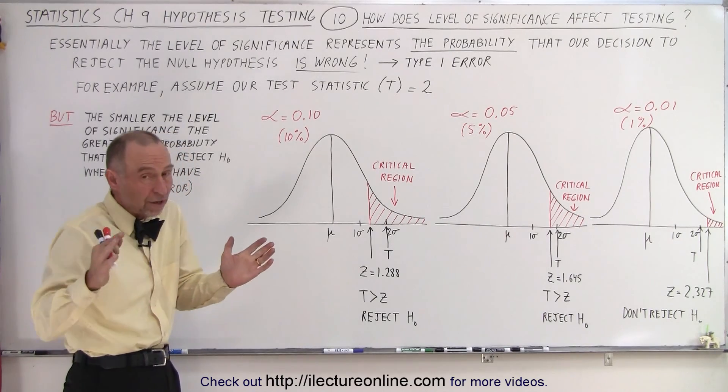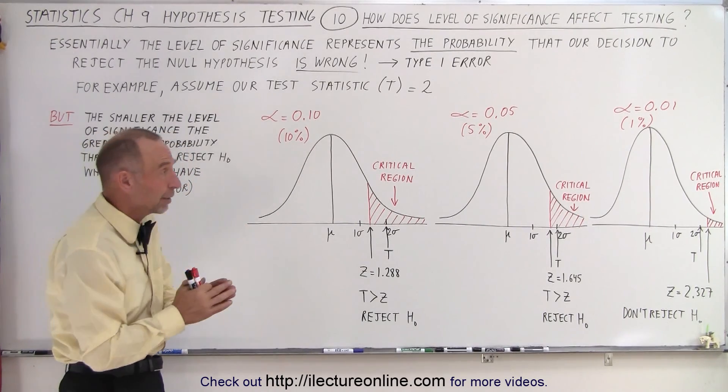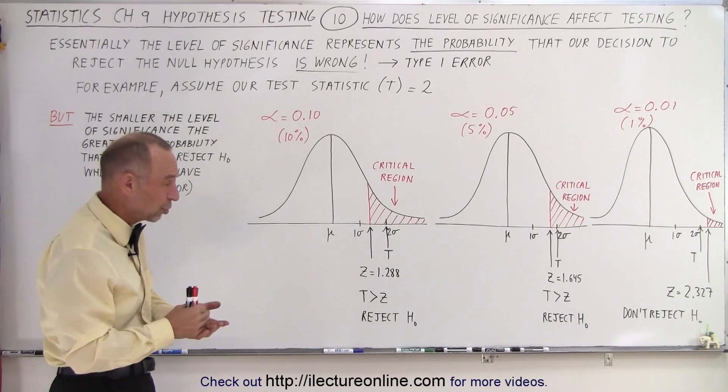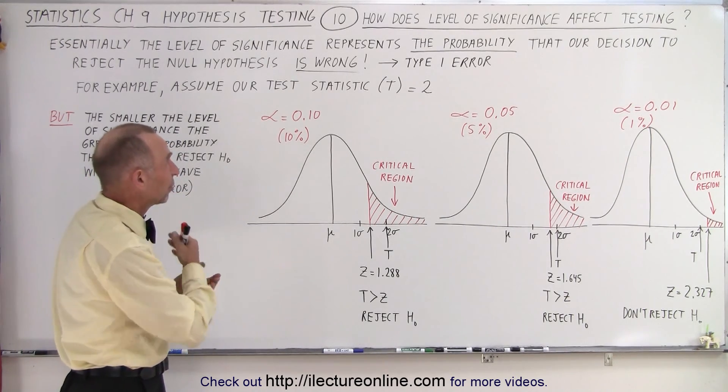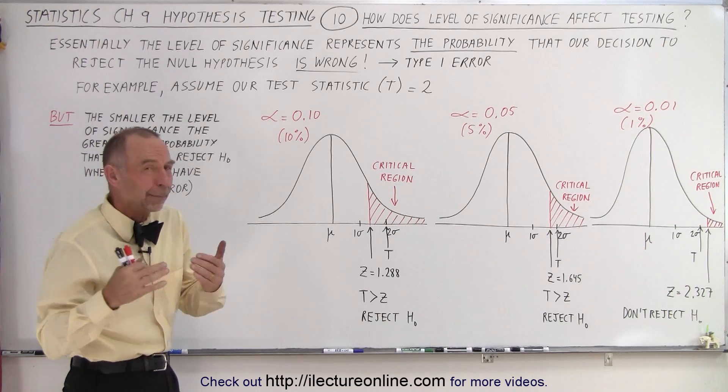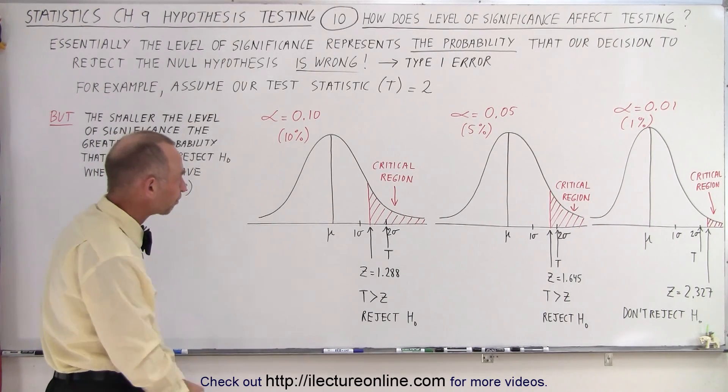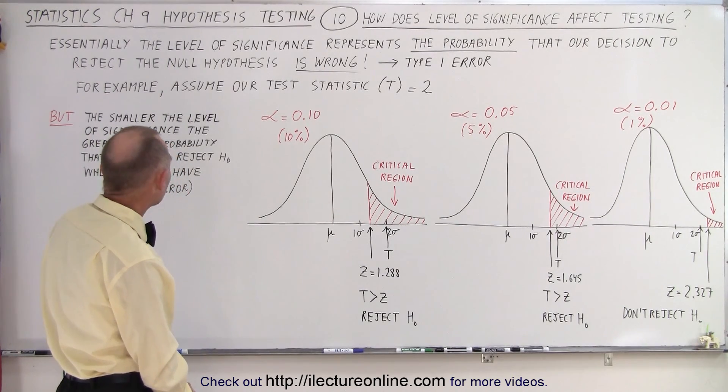Of course, we want to reduce that Type 1 error. We don't want to reject the null hypothesis when the null hypothesis is true. So let's do an example.